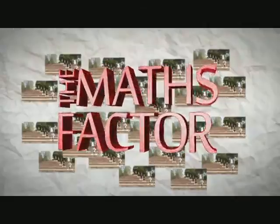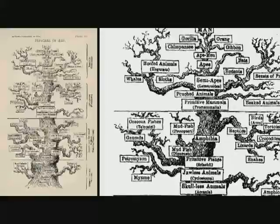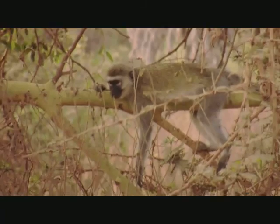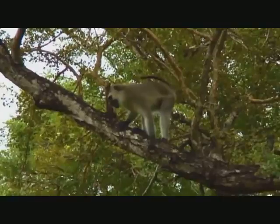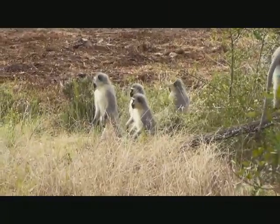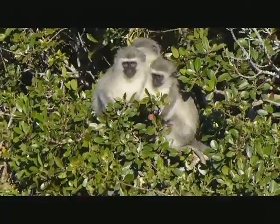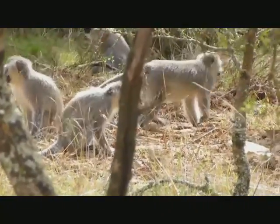We now move from plotting evolutionary trees to plotting animal behavior. Let's meet vervet monkeys: when a predator is close, the vervet monkeys give an alarm call to warn fellow monkeys — even though in doing so they attract attention to themselves, increasing their personal chance of being attacked. Why would they do this? Isn't altruism detrimental to their chances of survival?